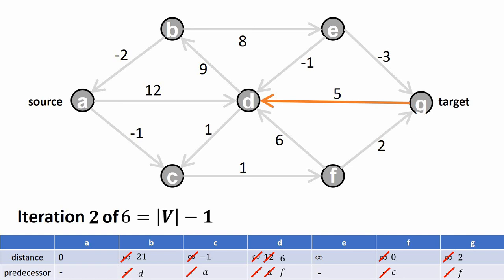We have now looked at all edges once. For each edge we checked the table, and for some edges we performed an update. Those values give us the distances of the currently shortest known paths to each vertex.